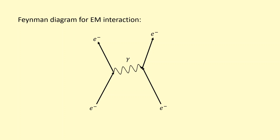In this diagram, the y-axis — the upward direction — represents time as it goes forward. The x-axis doesn't really represent space.